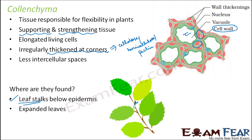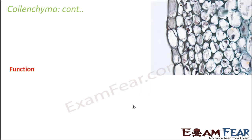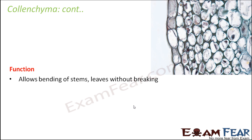So basically colenchyma provides mechanical support to growing plant parts. It is also seen at the stem apex, that is the stem tip. Now to summarize its function: it allows bending of stems and leaves without breaking, but definitely within an extent — if you bend it too much, then obviously the stem might break or the leaves might get torn off. So it provides mechanical support to the plant.